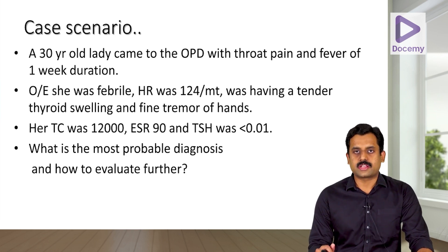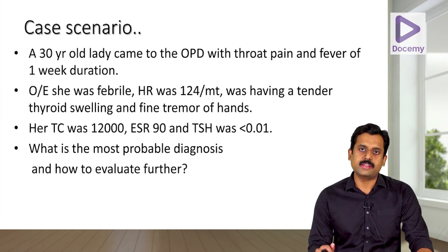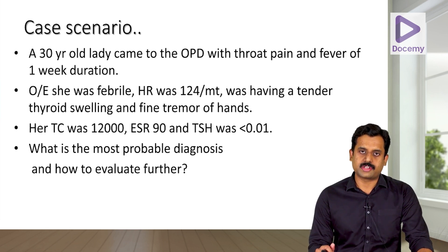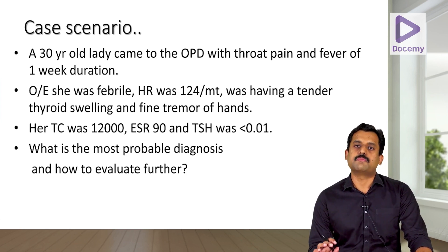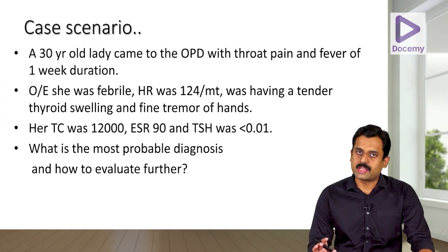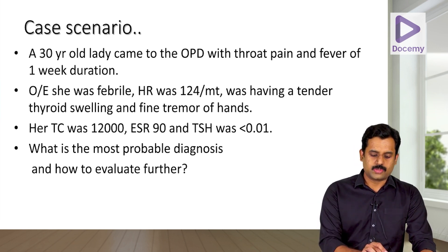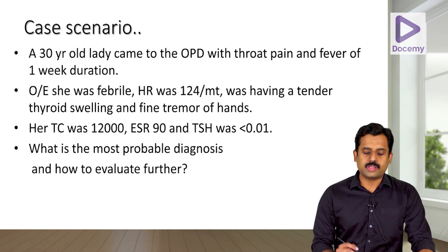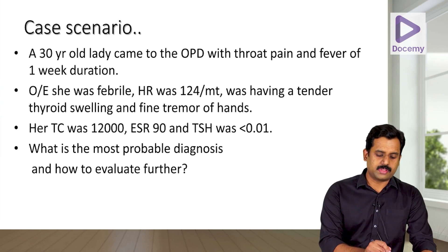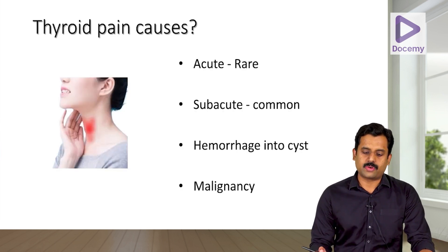Her total count was 12,000, her ESR was raised at 90, and her TSH was not detectable — less than 0.01. What is the most probable diagnosis and how will you evaluate her further? This patient has anterior neck pain or thyroid pain.